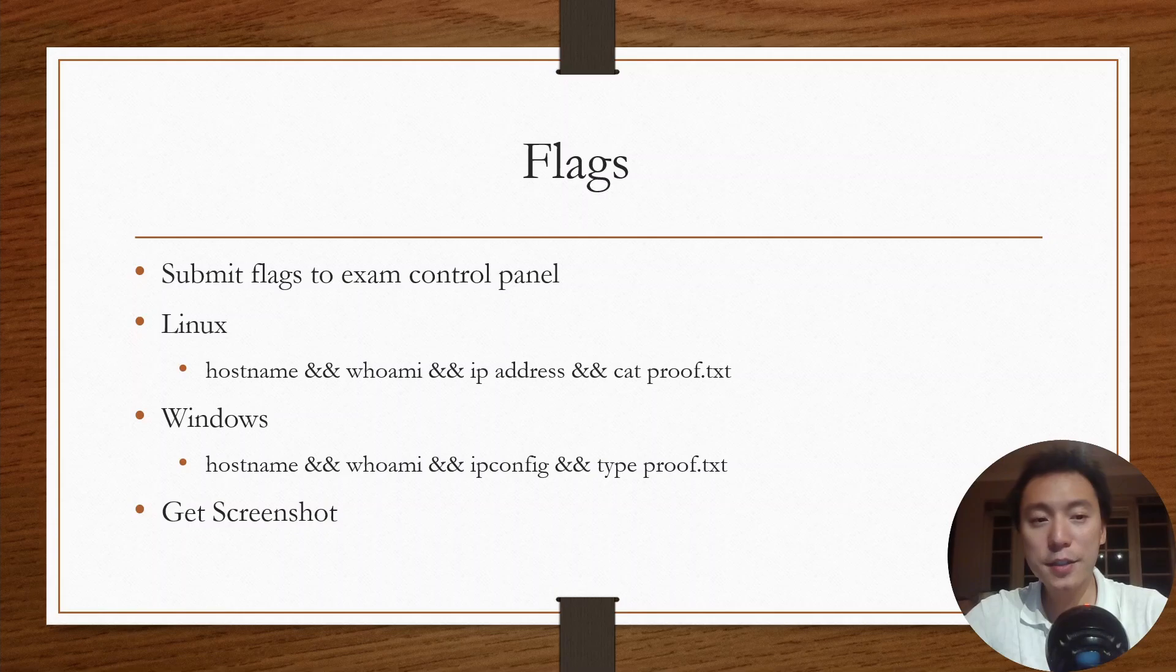To submit flags, you have to submit them to the exam control panel and you have to get screenshots of those flags in your terminal as well. This is very important because people have failed because they have failed to get the screenshots of these flags. So you want to cat these flags out and also provide the hostname and the IP address and whoami command on essentially the same screenshot. This is basically two commands that I use to cat out the flags and then get my screenshot for Linux and Windows.